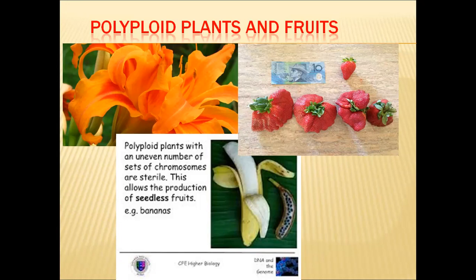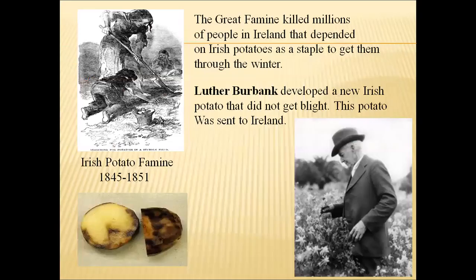Another method in selective breeding is polyploidy, especially useful in plants and fruits. Polyploid plants with an uneven number of chromosome sets are sterile, but polyploids with an even number of chromosome sets are fertile and can survive as a new species. In most cases, these even-number polyploids are very big in size and usually seedless. Seedless bananas and many seedless fruits have been developed through polyploidy experiments.